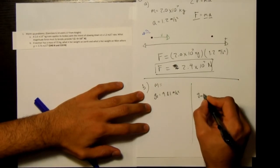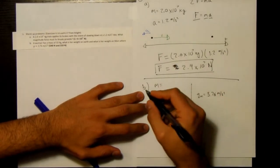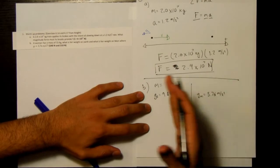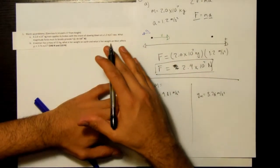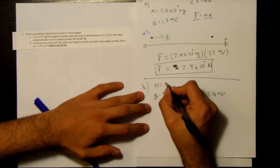G on Mars is going to be what they give us, 3.76 meters per second squared. And in both cases, the mass is going to be the same. You have your certain mass on Earth, you go to Mars, and your mass doesn't change. So 55 kilograms.